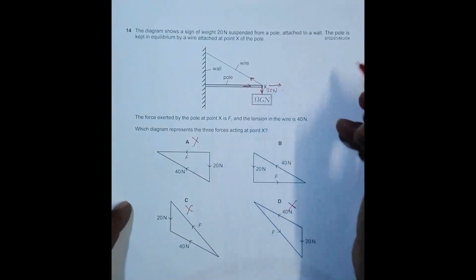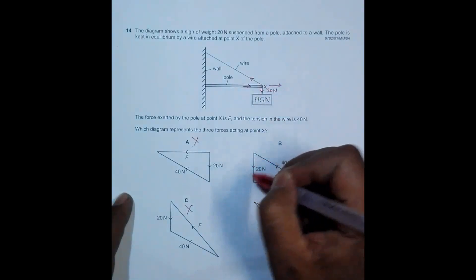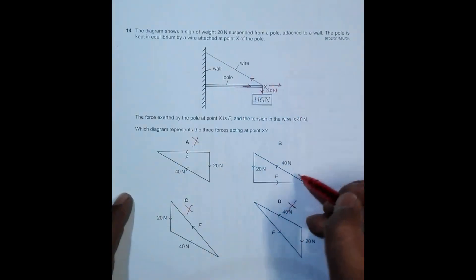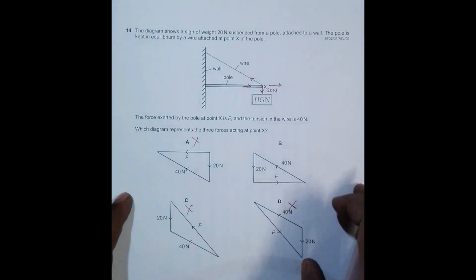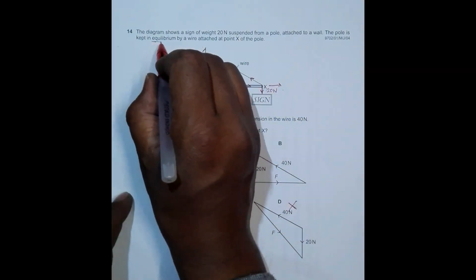The only thing which qualifies is this where the horizontal force is exactly like this, then the vertical one which is 20 Newtons like this, and the tension in the wire in this direction. So the directions are all correct.